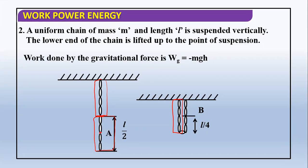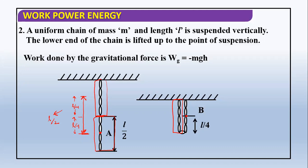The lower part is only moved. You have to look from the central point — the central point is here initially, and now the central point is here. So how much height does it go? This is the initial central point and the final central point. Total length is l, so this gap is l by 4, and this gap is l by 4, so total gap is l by 2.